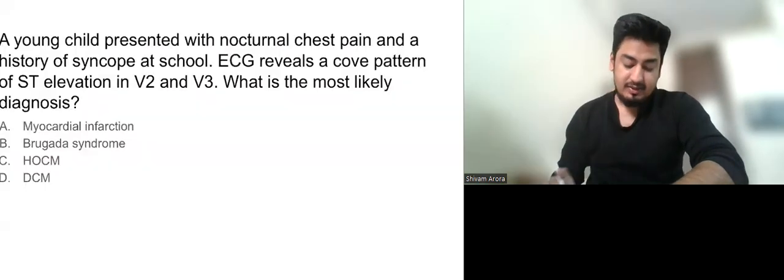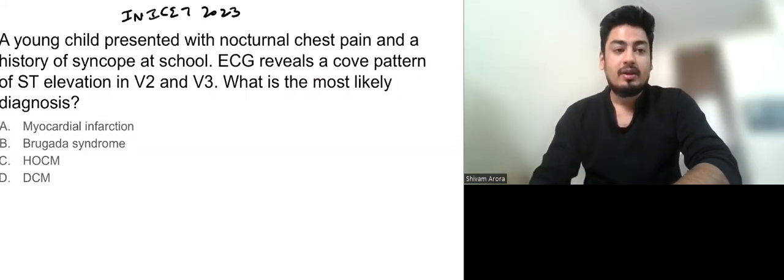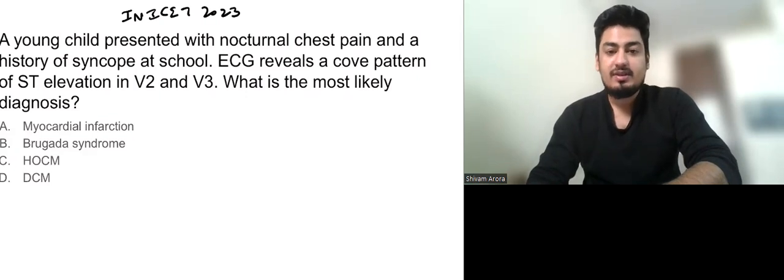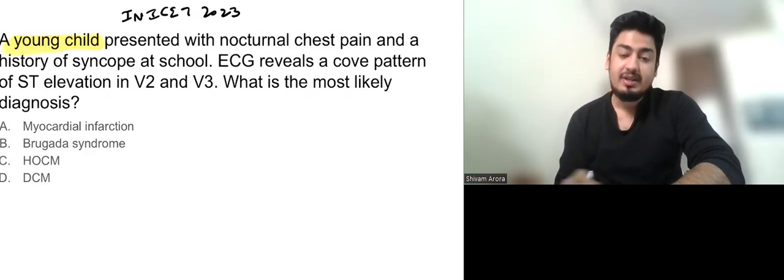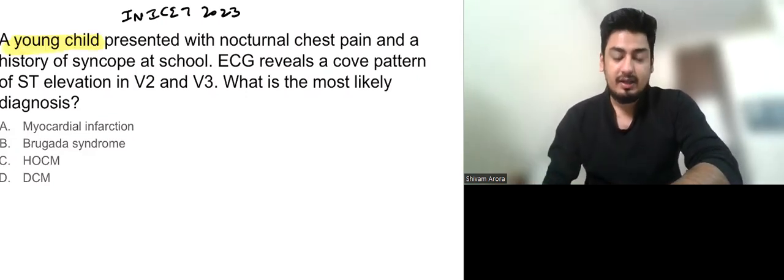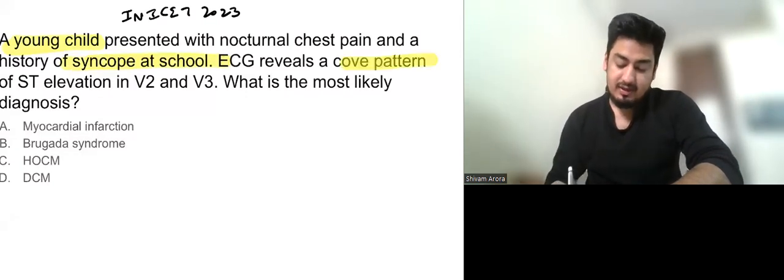Now this is the fourth question. The question came in INICET 2023. The question reads: a young child presented with nocturnal chest pain and history of syncope at school. ECG reveals a cove pattern of ST elevation in V2 and V3. Now one thing to focus is the patient is a young child. Other than that he has a history of syncope at school. Now ECG reveals a cove pattern of ST elevation in V2 and V3.